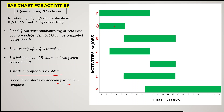Both R and U can start simultaneously only when Q is complete. Activity R can start only after the completion of Q, and U can also start only after Q is complete. From this bar chart we understand that some activities depend on the completion time of another activity. If Q gets delayed, it will affect the starting time of R and similarly U will also be delayed.